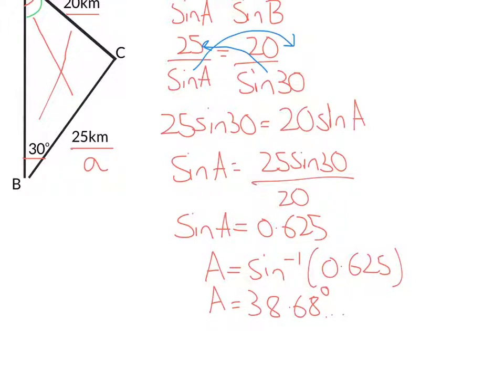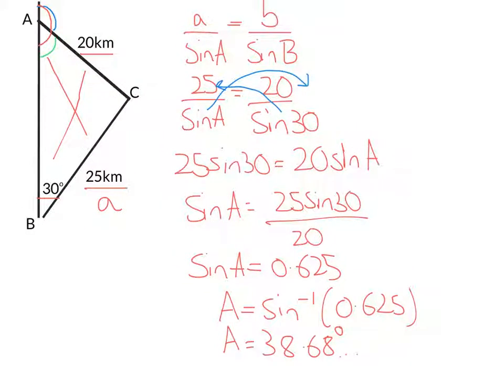So looking back at our diagram, the green angle is 38.68. So to work out the blue angle up here to use to get my bearings, then I take the green angle away from 180. So what I'm going to do, my last thing is I'm going to do 180 minus 38.68.